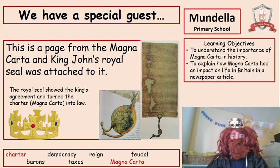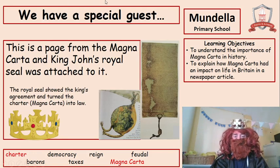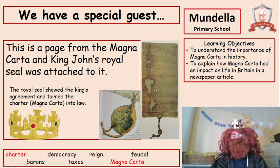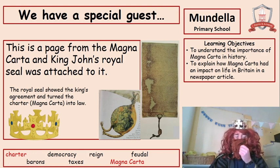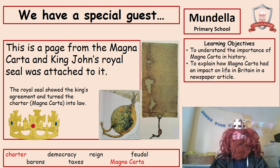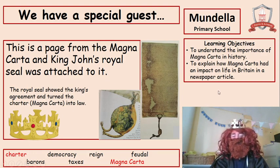It is I, King John. This is a page from the Magna Carta, which I was forced against my will to sign. There is my royal seal, which makes it official — there was no turning back. I had to live with the Magna Carta and give people rights. Terrible business. If I put my royal seal on it, it meant that the Magna Carta now became law and we all had to follow it.